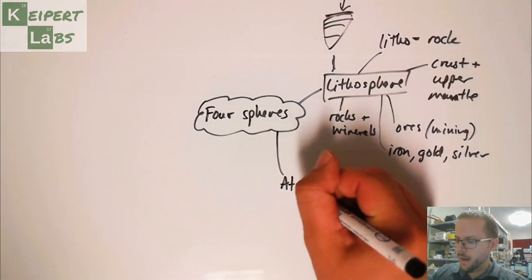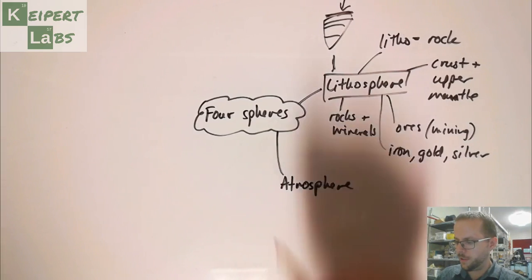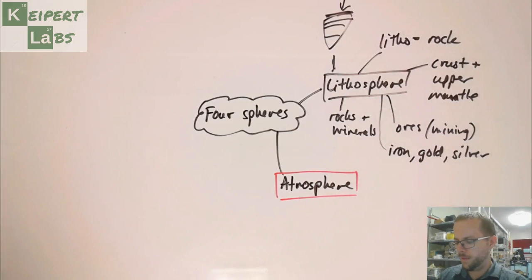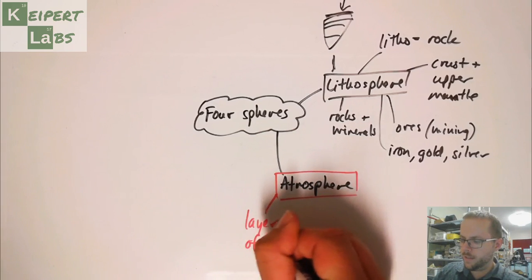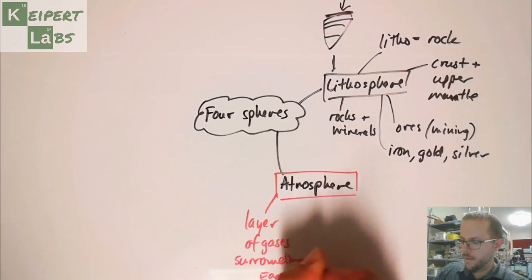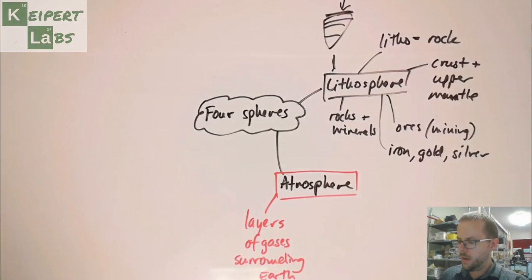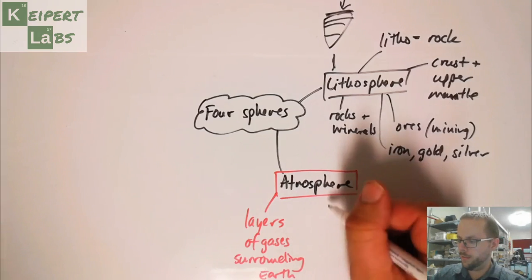Let's have a look at the atmosphere. So I'm going to use red for this one. So apologies if that makes it a little harder for you to read. So we're thinking about the atmosphere. We're thinking about the layer of gases surrounding earth. And I might actually go back and change that to be layers, plural.